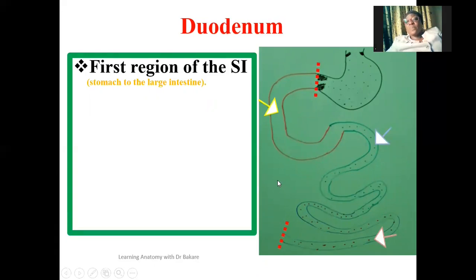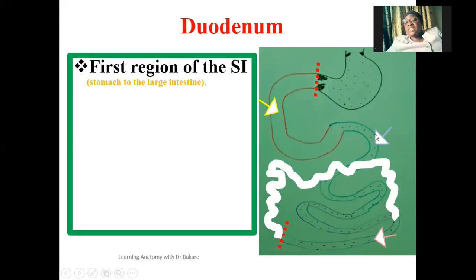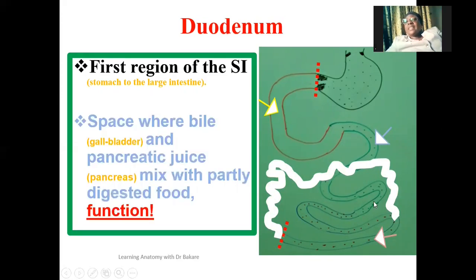From the cecum, it goes up into the ascending colon, transverse colon, descending colon, and sigmoid. The small intestine is the region between the stomach and the large intestine, highlighted in white. The first region of the small intestine is the duodenum, followed by the jejunum, then the ileum. Now, talking about the functions of the duodenum — the duodenum forms part of the GI tract.